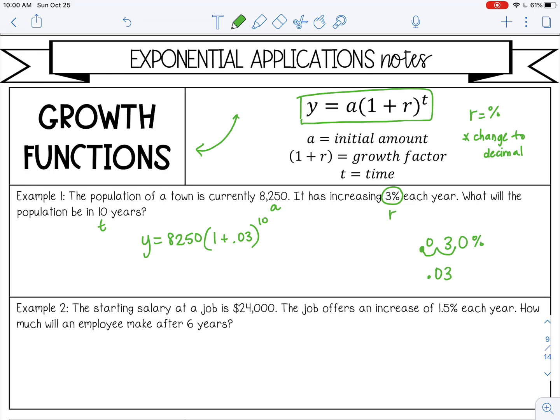I'm going to simplify in the parentheses first. That would be 1.03. And then from there you should be able to type it in your calculator exactly like it looks. So 8,250, parentheses, 1.03, and then an exponent of 10.